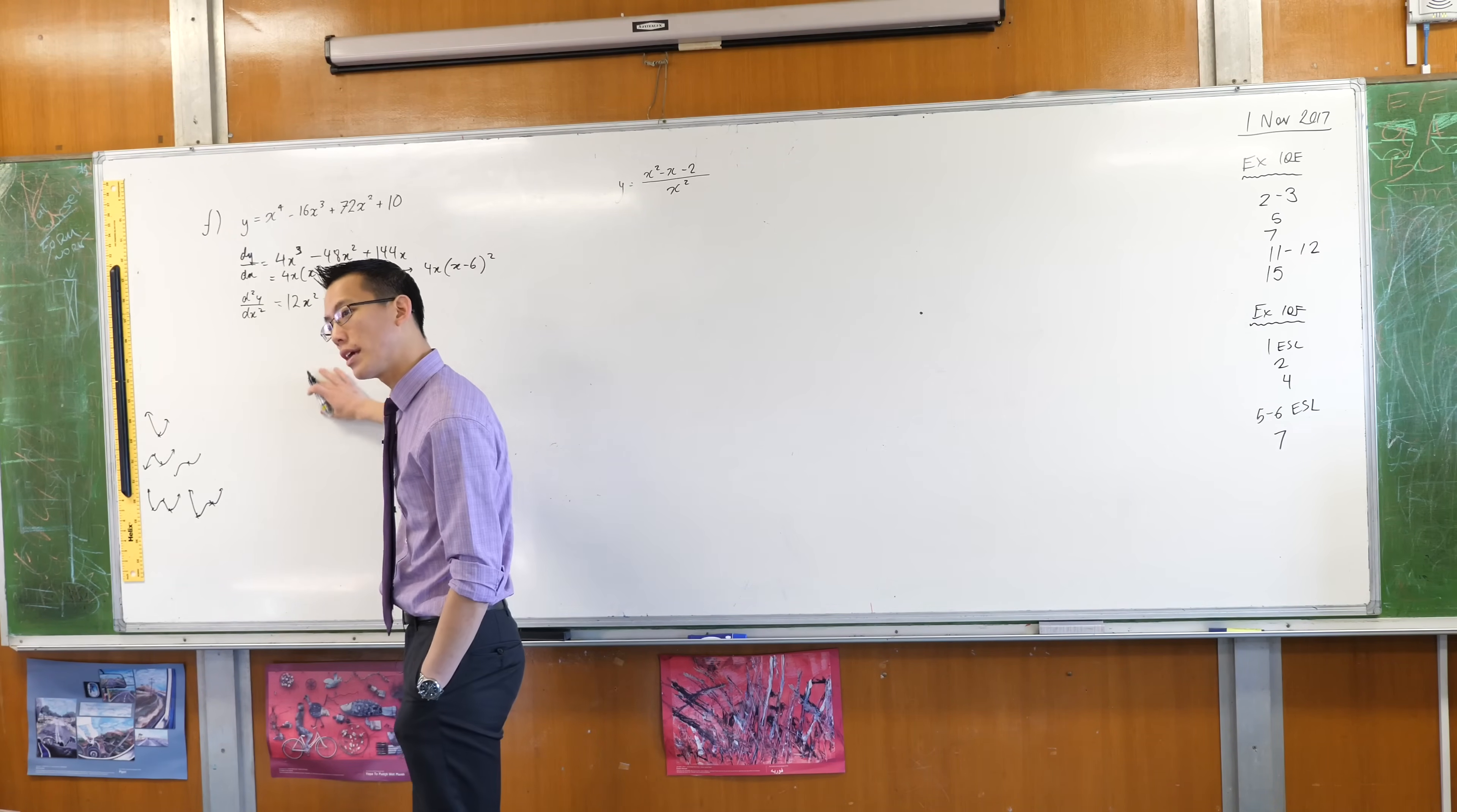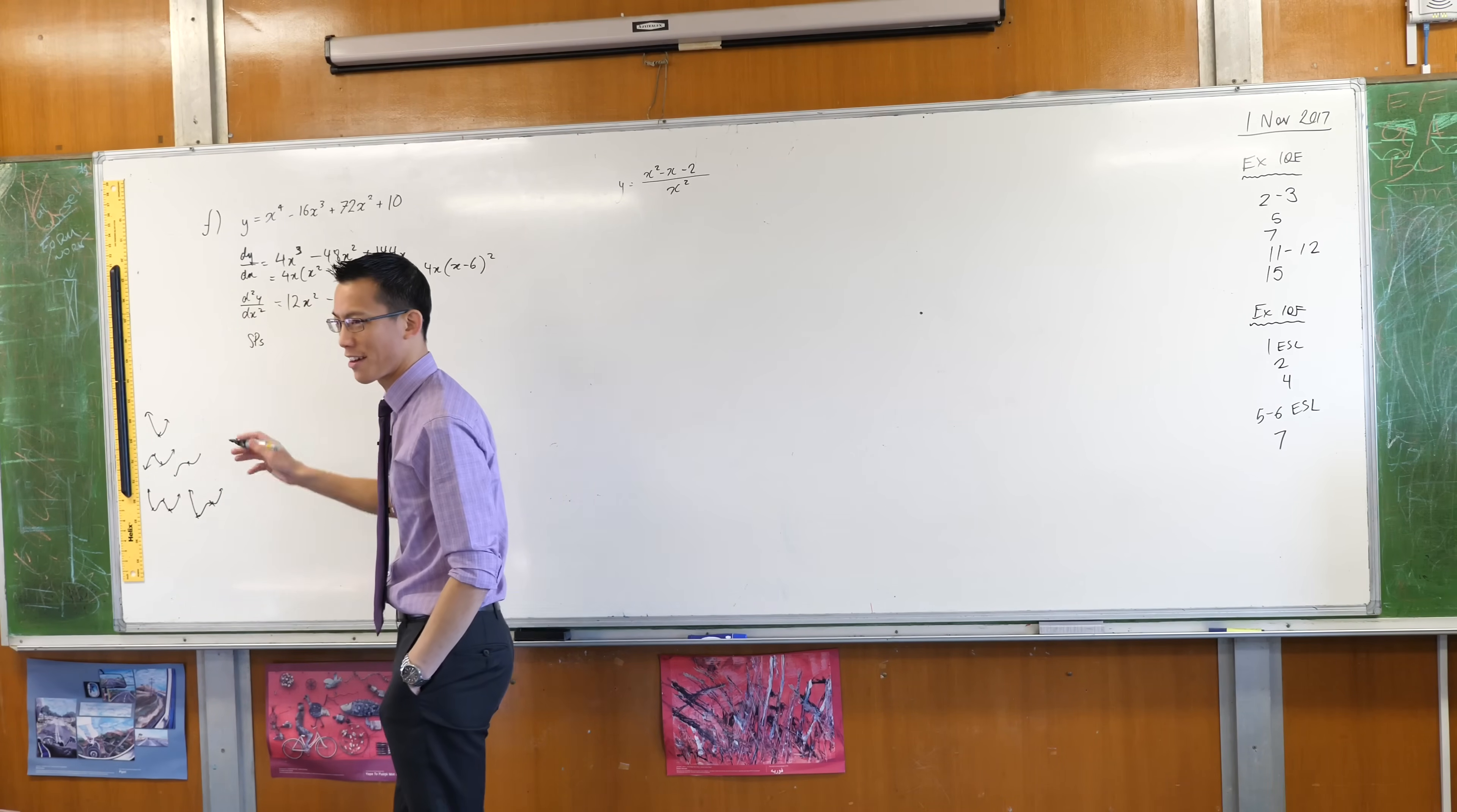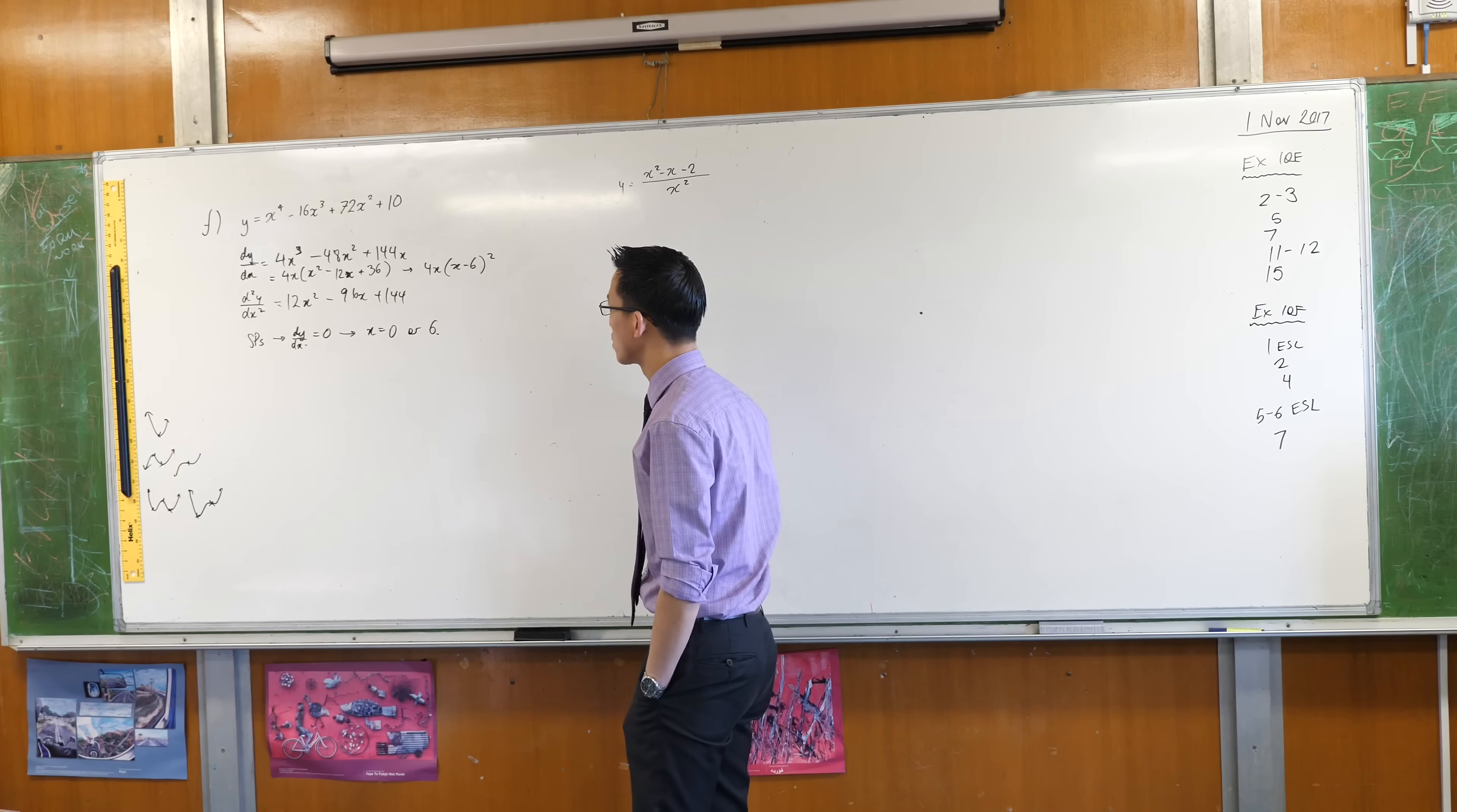I'm not going to worry too much about my working here because the question is graph, so the primary thing I'm producing is the graph and all this working is just subsidiary. They're not really going to mark my working, they're going to mark my graph. So therefore I'm going to play a bit fast and loose with things. So if I want stationary points, I'll abbreviate that because I'm just in a hurry and I'm not worried about the working. They exist when the first derivative is zero, which is when x equals zero or x equals six.